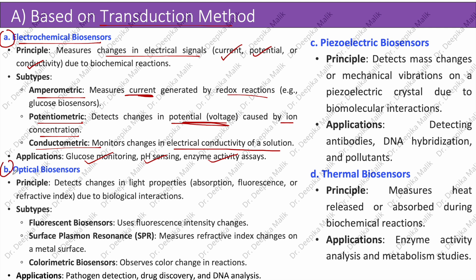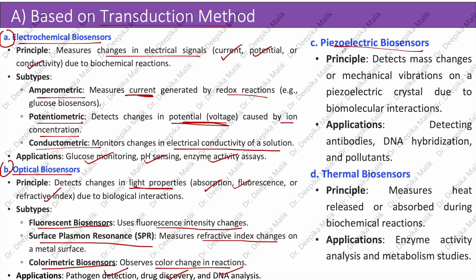Optical biosensors detect changes in light properties such as absorption, fluorescence, or refractive index due to biological interactions. Fluorescent biosensors use fluorescence intensity changes; surface plasmon resonance measures refractive index changes on a metal surface; colorimetric biosensors observe color changes in reactions. Applications include pathogen detection, drug discovery, and DNA analysis. Piezoelectric biosensors detect mass changes or mechanical vibrations on a piezoelectric crystal due to biomolecular interactions; they are used for detecting antibodies, DNA hybridization, and pollutants. Thermal biosensors measure heat released or absorbed during biochemical reactions and are used in enzyme activity analysis and metabolism studies.